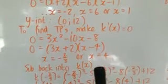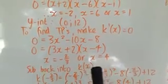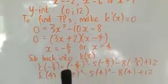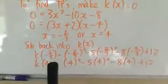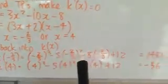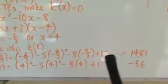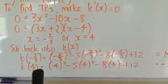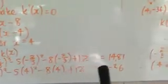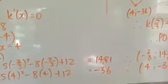At this stage, please sub in those x values into the original function. So there it is. I've subbed it back into the original function and I got 14.81 when I subbed in negative 2 over 3 and when I subbed in 4, I got negative 36. So we've got our two turning points.